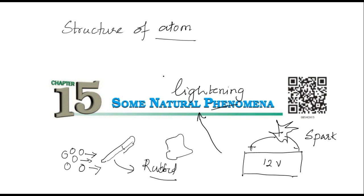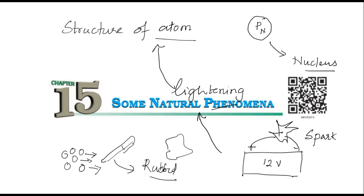Then we thought of relating this towards a natural phenomenon called lightning. And to understand lightning, we thought that we have to study the structure of atom. In this structure of atom, we have learnt that atom contains protons and neutrons in the center, which is called the nucleus. And electrons are moving around the nucleus. This is the brief structure of atom. We have studied that protons have got a kind of charge — electric charge. A charge is a force experienced by that particle.